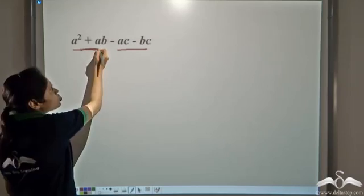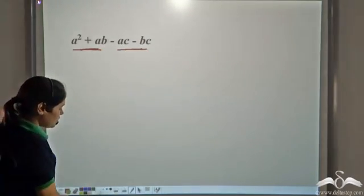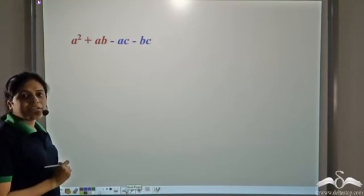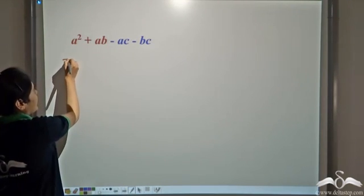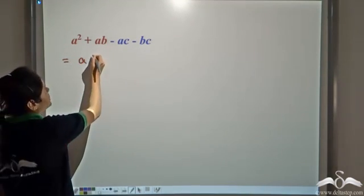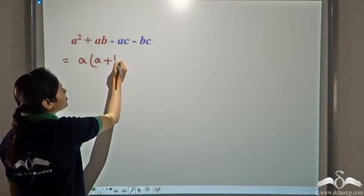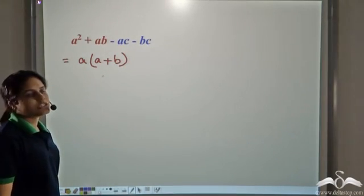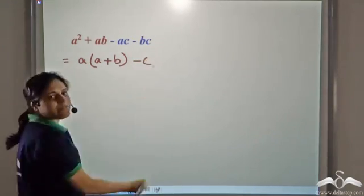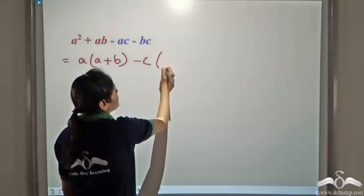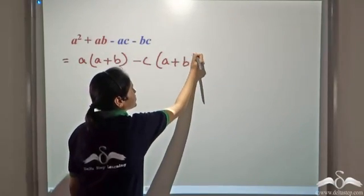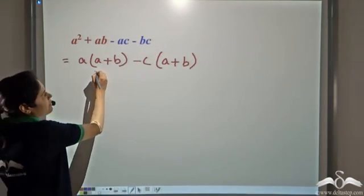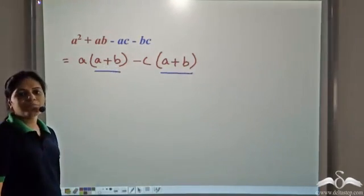We take the first two terms and the next two terms. The common factor between the first two terms is a, and we can write it as a(a+b) — since this is a-squared plus ab. For the last two terms, negative c is a common factor. Taking negative c common, we get (a+b) because we have negative ac and negative bc. So we have (a+b) in both groups.